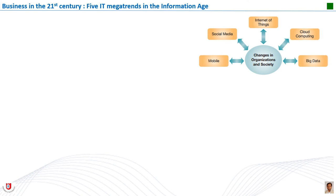Today, in most developed societies, information technologies have become pervasive and are used throughout society. The development of sophisticated web technologies has brought about a fundamental shift in the types of information technologies being used, and we are seeing five mega trends that shape organizations and society. Knowing about the influence of these mega trends will be increasingly important for both your work life and your personal life. Let's explore each of these individually.